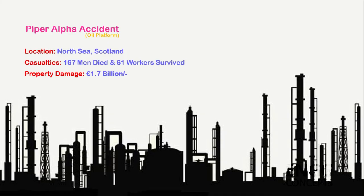Now let's see some examples of accident costs. The Piper Alpha accident: the Piper Alpha was an oil platform located in the North Sea, Scotland. When the Piper Alpha accident took place, 167 men died and 61 workers escaped and survived. It is estimated that property damage was 1.7 billion euros — the total insured loss — making the Piper Alpha accident one of the costliest man-made catastrophes ever.